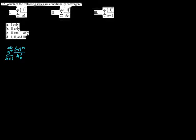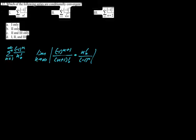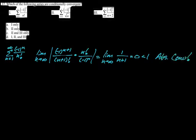I would just use the ratio test on this — the ratio test kills absolute values. So it's the (n+1)th term divided by the nth term. If we do this, we just get 1 over n+1, which goes to zero as n goes to infinity. That's less than one, so this converges absolutely, and so it does not converge conditionally.